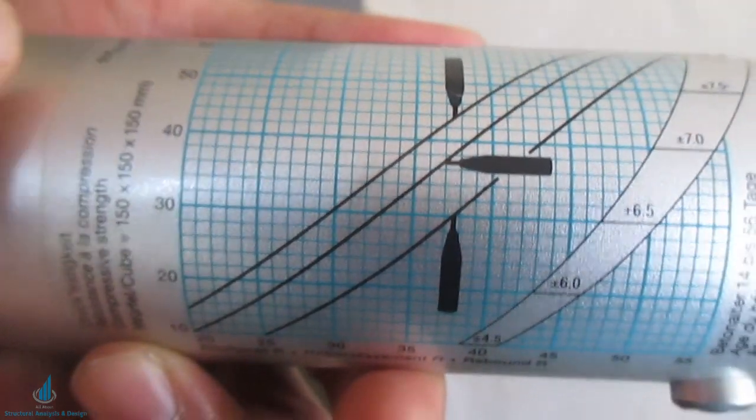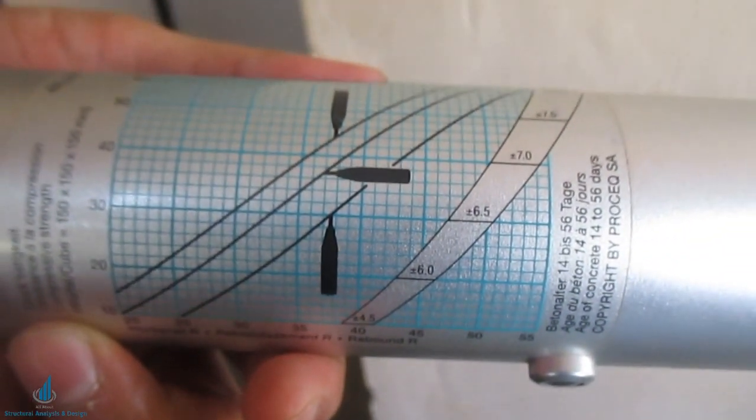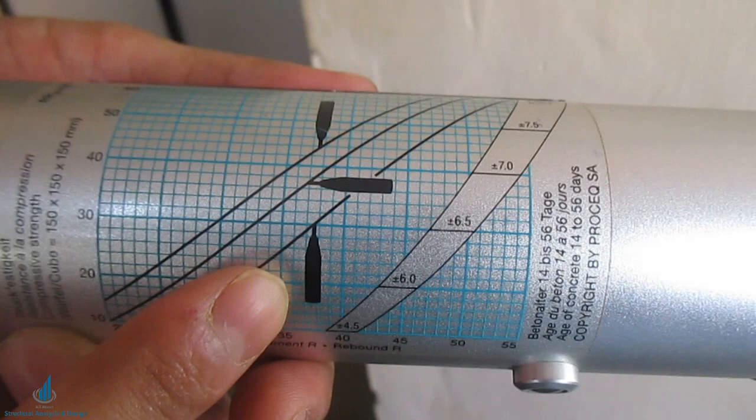And if you see the graph carefully there are three curves based on the placement of hammer.